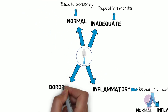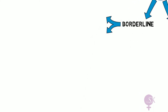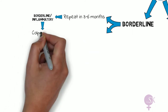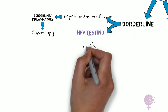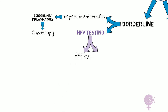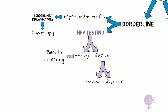If the smear is borderline, we have two options: either repeat the smear in three to six months — if the repeat smear is borderline or inflammatory, then the patient would need a colposcopy — or else we can perform HPV testing. If the HPV result is negative, nothing else needs to be done and the woman can return to routine screening. If the HPV test is positive and it is a low-risk HPV, she would need a repeat smear in six months. If a high-risk HPV, she needs a colposcopy.